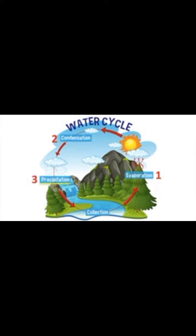Then water falls as precipitation. This occurs when the droplets in the clouds become too big and too heavy for the air to hold them, so they fall as precipitation. Precipitation can take many forms, including rain, hail and snow.